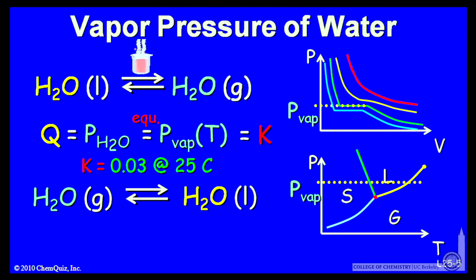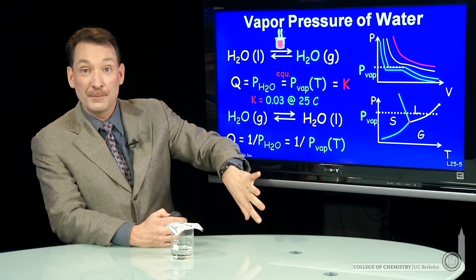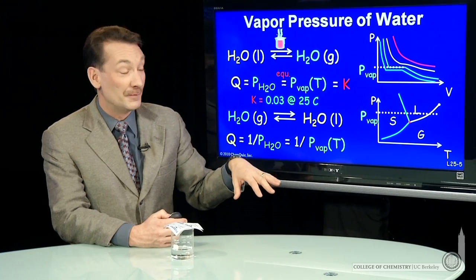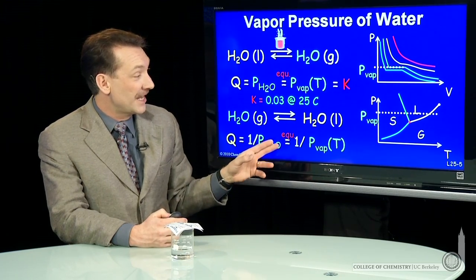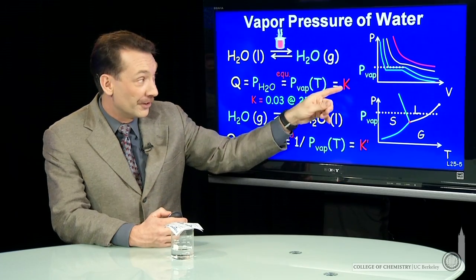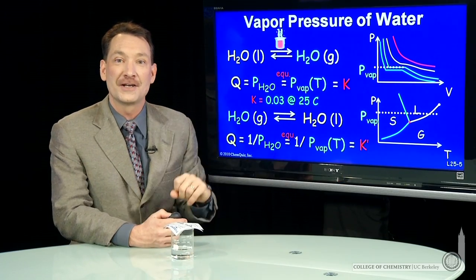Equilibria depend on the direction you write them. If I write the reaction quotient for this in the reverse direction, now the reaction quotient is 1 over the vapor pressure, the partial pressure of water. And that's in general true. If you reverse a chemical reaction, you take the reciprocal of the reaction quotient and the reciprocal of the equilibrium constant. So in this case, we'd have the equilibrium constant K prime is 1 over K for this forward reaction that we've been talking about.